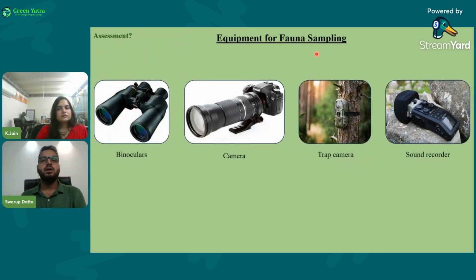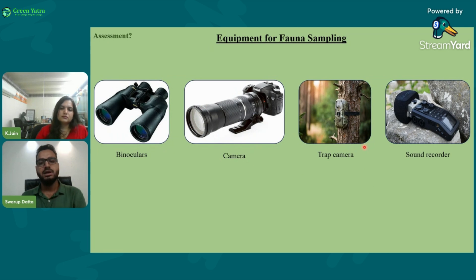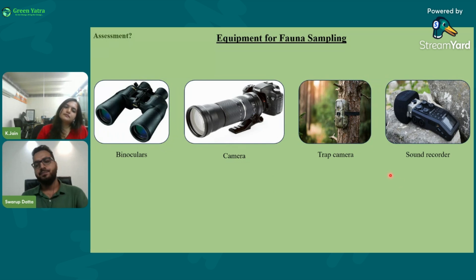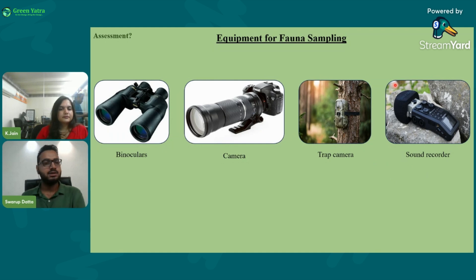For fauna sampling, we need binoculars to observe birds and animals, a camera to capture images, and trap cameras for nocturnal animals. Since we cannot sample at night, we place cameras on pathways in the forest to capture wildlife images. We also need a sound recorder for acoustic surveys.